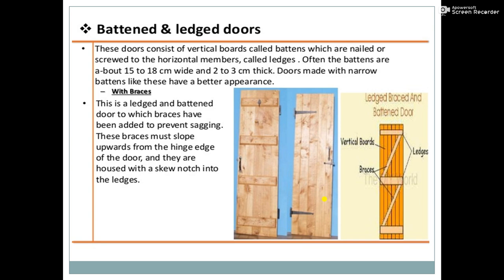The 2nd type of door is the battened and ledged door. In this type, vertical battens are taken and attached with the help of a ledge. The ledge supports and connects the vertical battens to each other. These doors consist of vertical boards called battens which are nailed or screwed to horizontal members called ledges. The battens are about 15 to 18 cm wide and 2 to 3 cm thick.